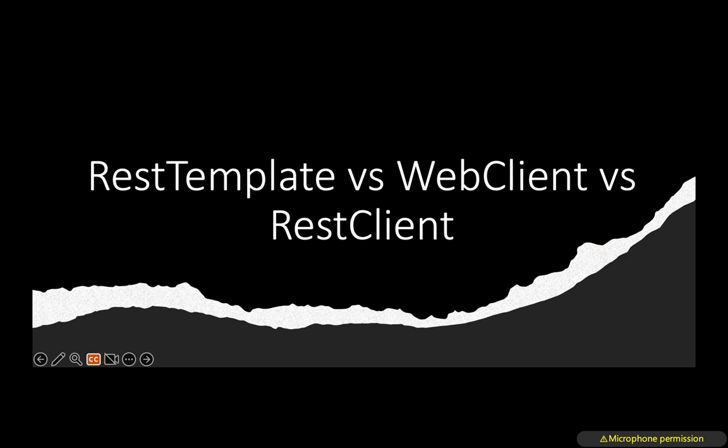Whereas with WebClient, if you want to make any synchronous or asynchronous API calls, we can use WebClient. With WebClient, we get the response as a Mono or Flux object — either we have to block or the client has to subscribe in order to get the API response. Whereas with RestClient, we just need the Spring Boot starter web dependency, which we'll cover in detail on the next slide.